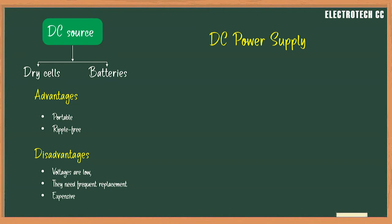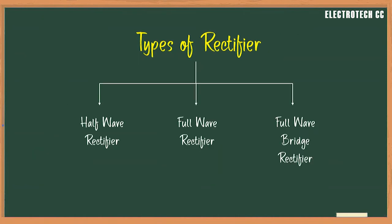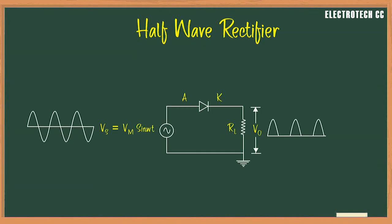The process of converting AC power to DC power is called rectification, and is accomplished with the help of rectifier, filter, and voltage regulator circuits. We will consider the following types of rectifiers: the first is the half wave rectifier, the second is the full wave rectifier, and the third is the bridge rectifier. So let us start with the half wave rectifier.